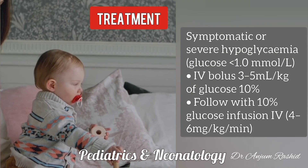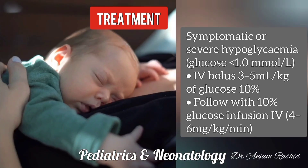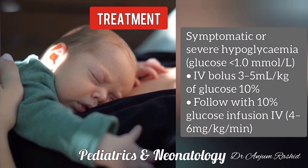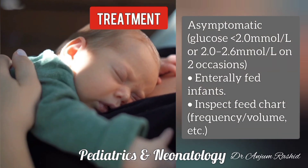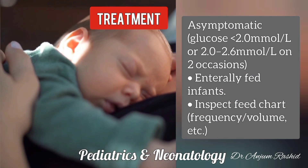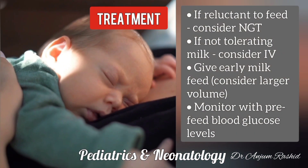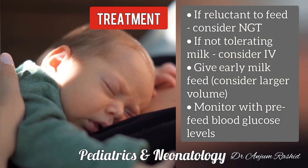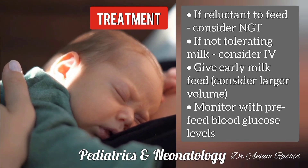For treatment of symptomatic or severe hypoglycemia, that is glucose less than 1 mmol per liter, give an IV bolus of 3 to 5 ml per kg of 10% glucose and follow with a 10% glucose infusion. In asymptomatic cases or glucose less than 2 mmol per liter, or 2 to 2.6 mmol per liter on two occasions, give enteral feed and inspect feed chart frequency and volume. If the infant is reluctant to feed, consider nasogastric tube feeding, and if not tolerating milk, consider IV infusion.